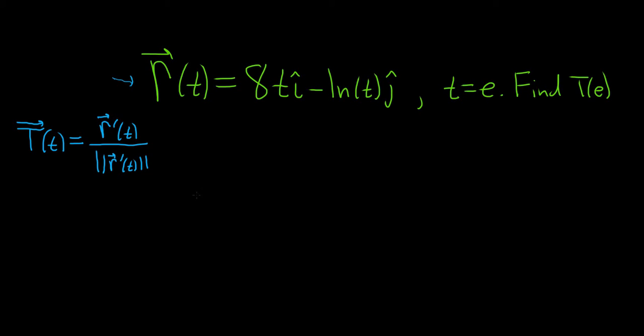OK, so all we have to do in this problem is work out big T. So we'll start by finding the derivative, r prime of t. The derivative of 8t is simply 8, so we get 8i hat. And the derivative of the natural log of t is 1 over t, so minus 1 over t j hat.